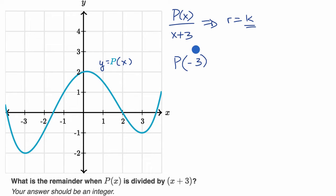You have to be very careful there. Sometimes people get confused. They see a positive three and then evaluate the polynomial at positive three to figure out the remainder. No, if you saw a positive three there, you would evaluate the polynomial at negative three.